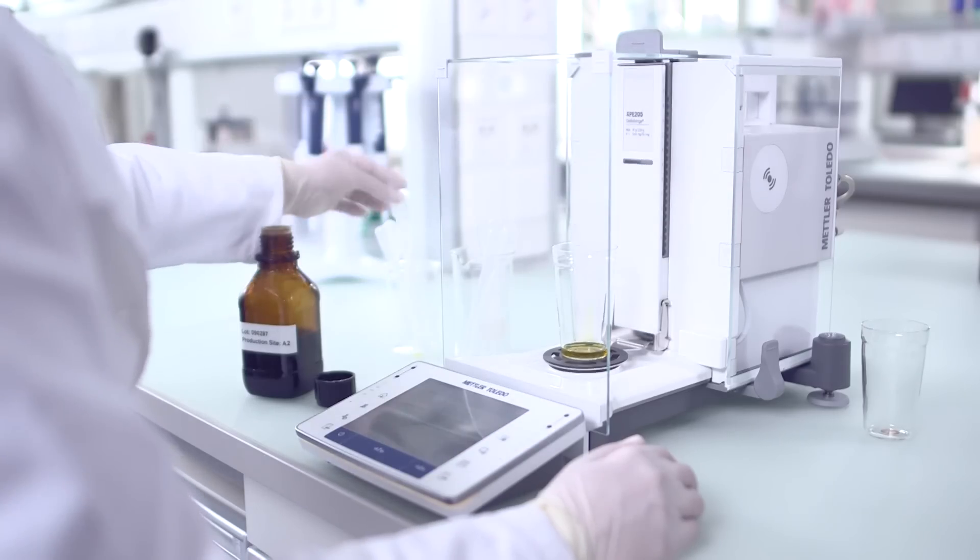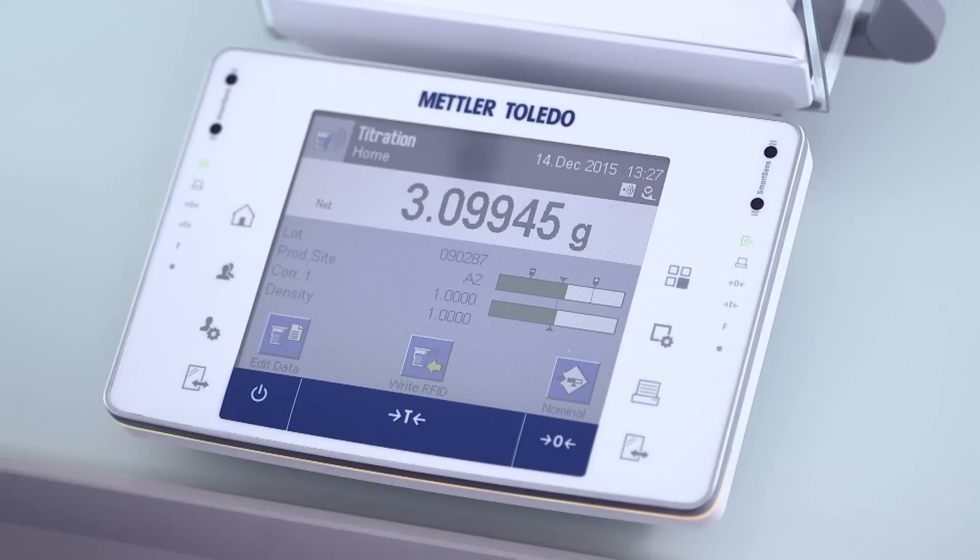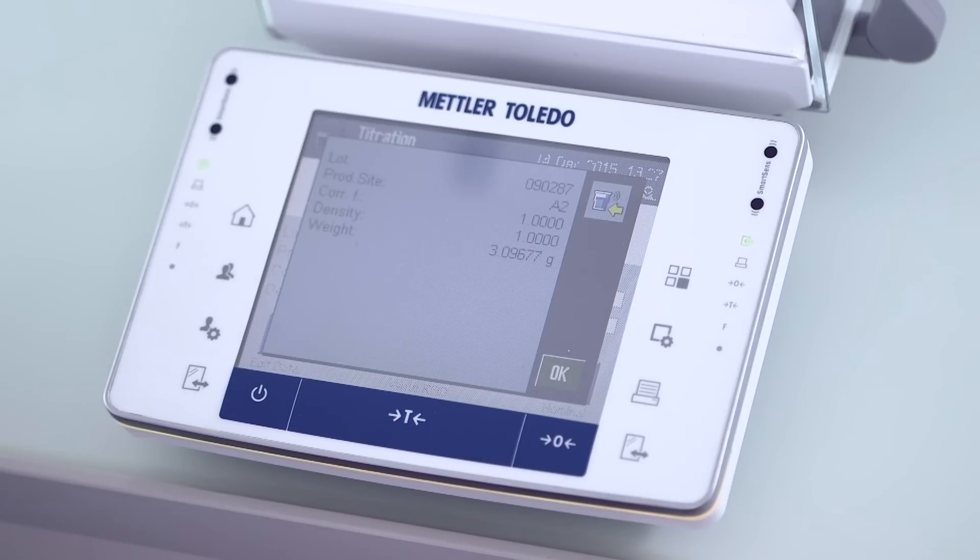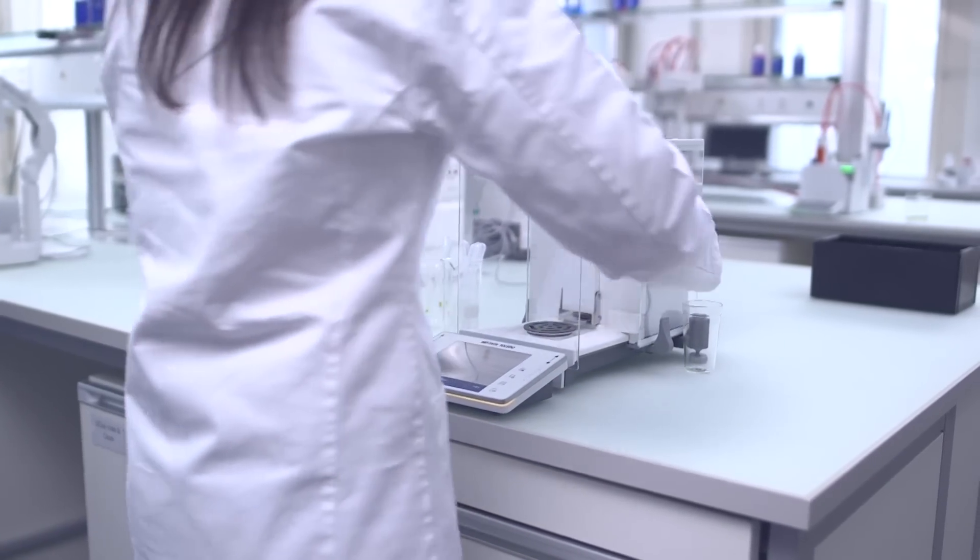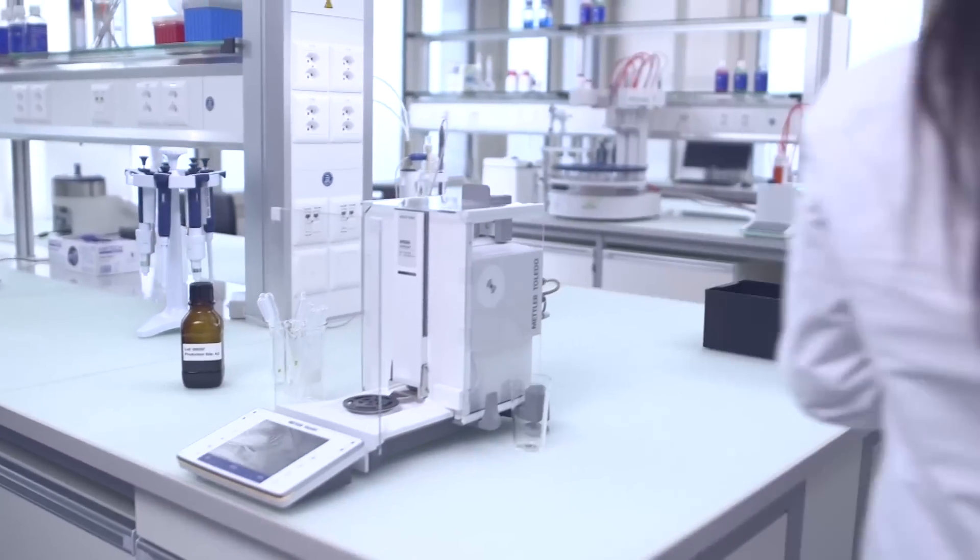At the balance, the sample data and weight are saved onto the RFID chip attached to the sample beaker. Together with the sample, the data is transferred to the excellence titrator, where it is read and saved.